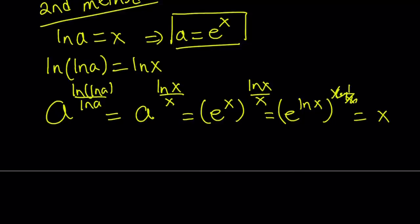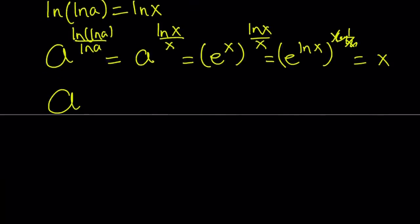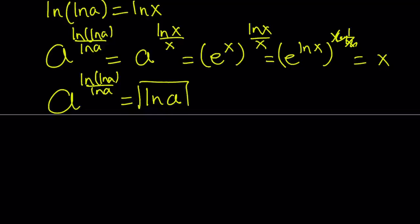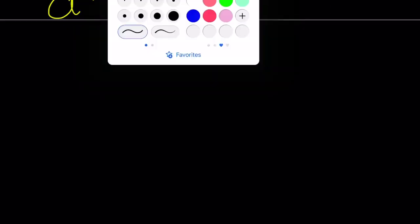Even though we got an answer in terms of x, we can always turn it into something in terms of a, because we know that x equals ln a. So our original expression, a to the power ln ln a over ln a, just becomes x, which is ln a. This will be the end of the second method. Now let's go ahead and take a look at the first method.